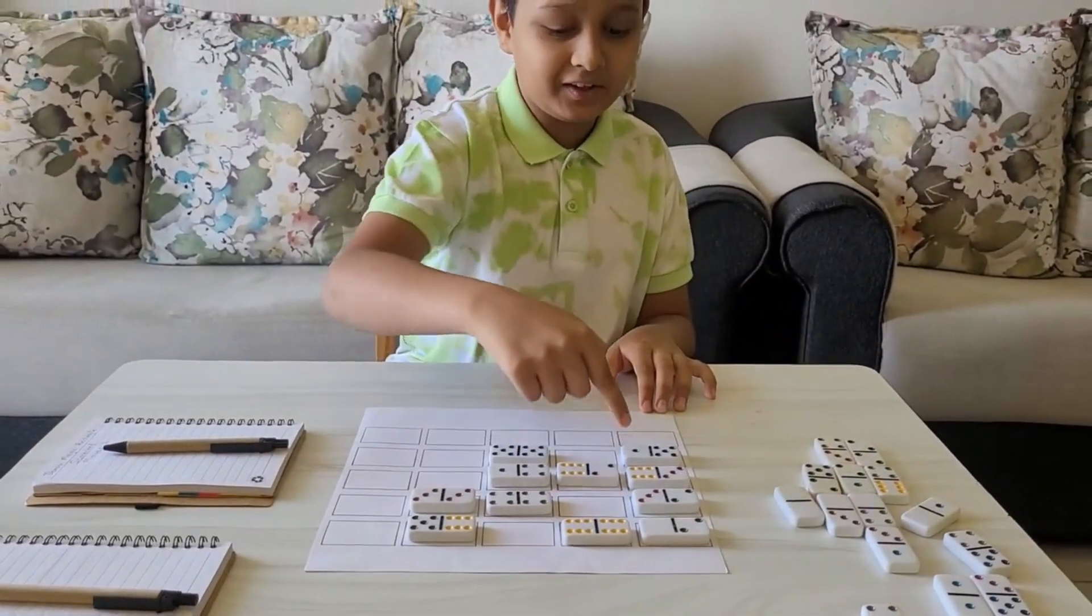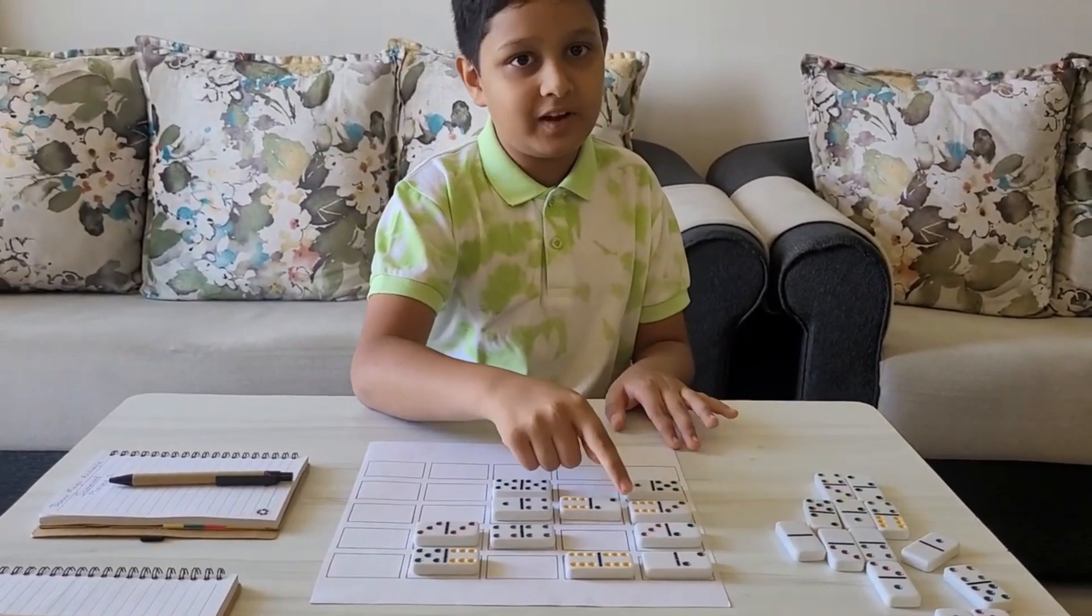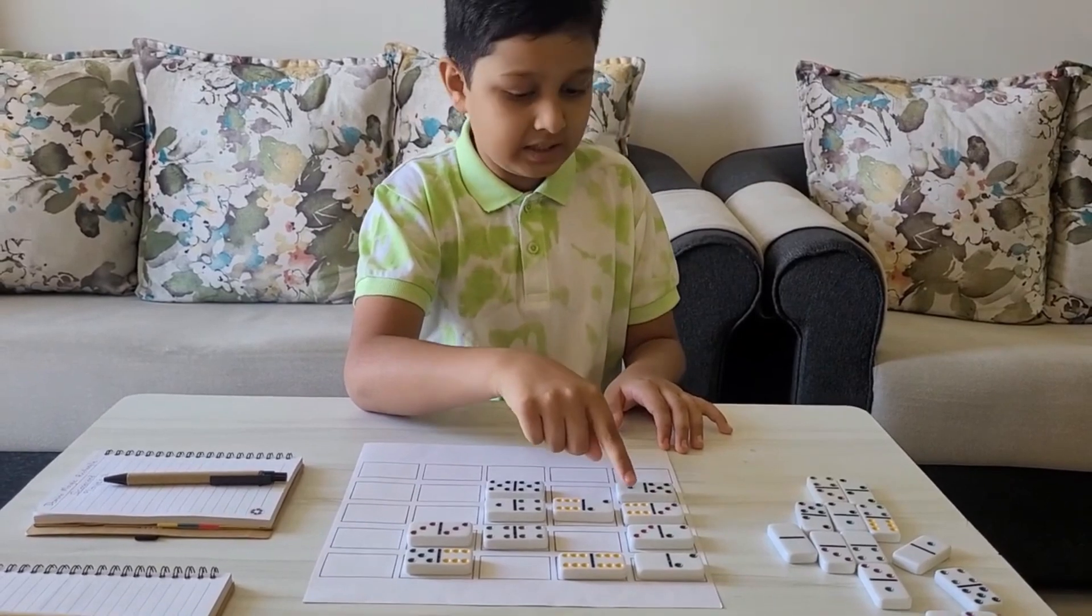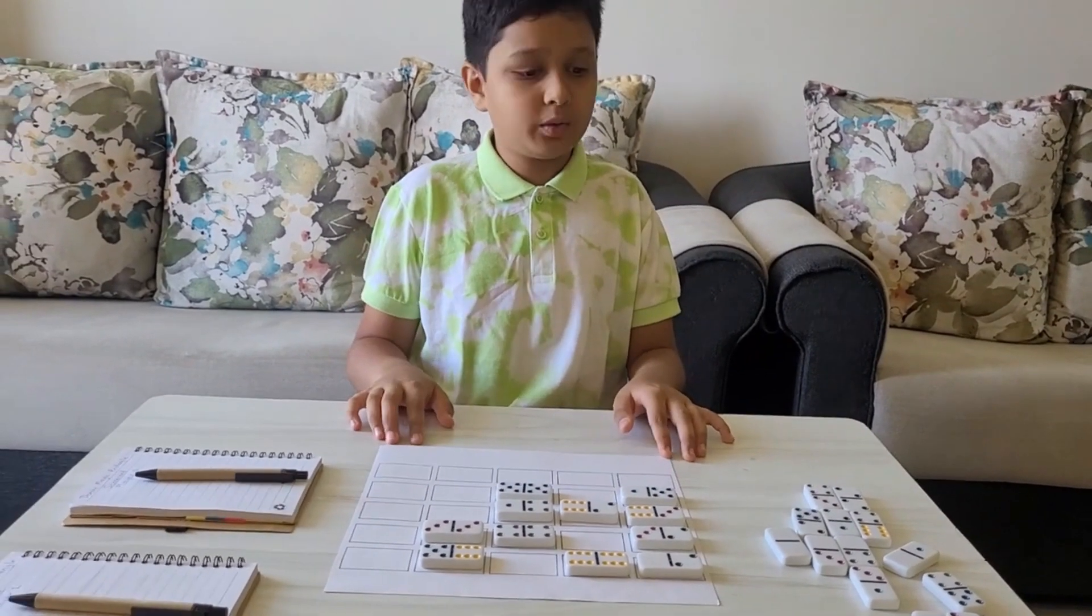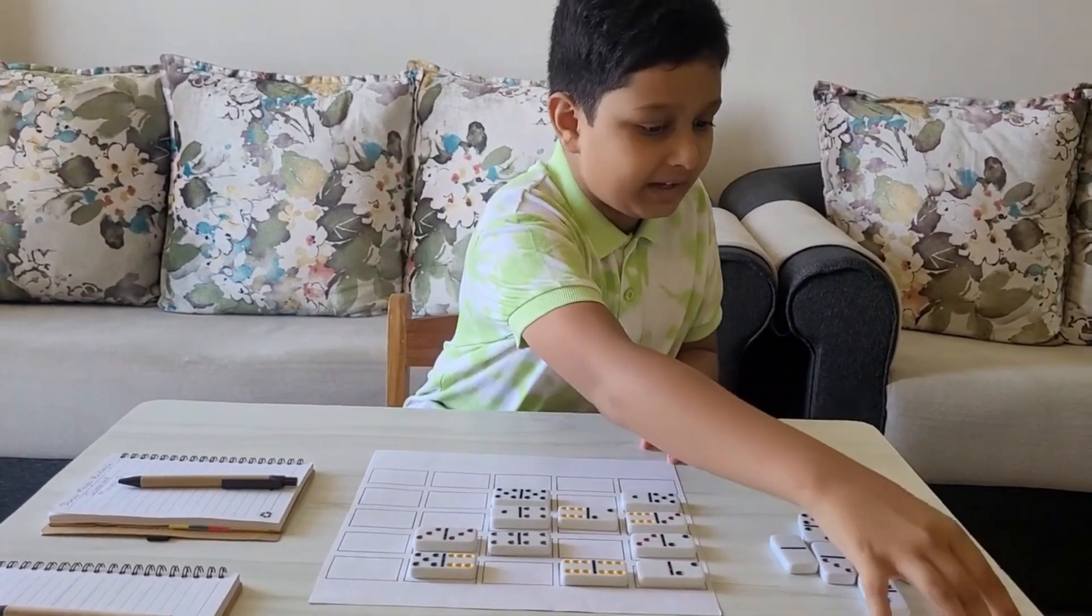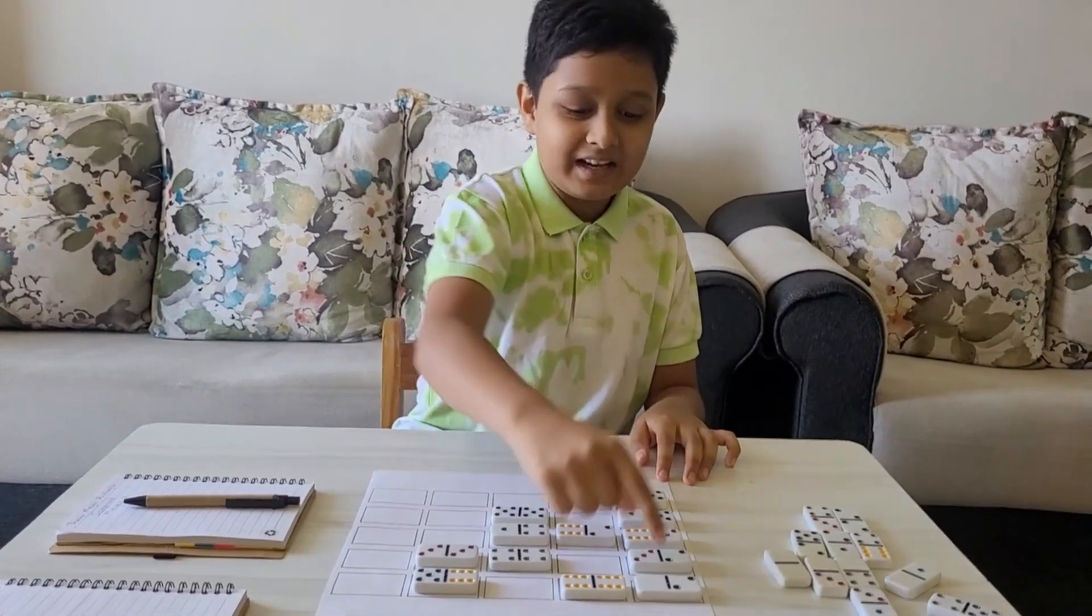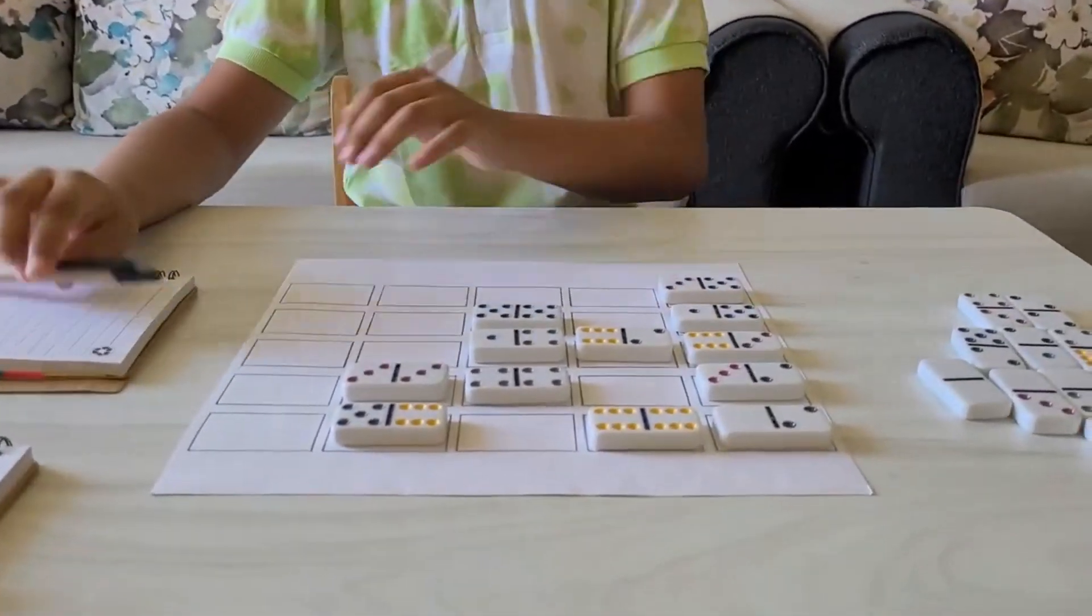Okay, now let me look at this one. 2 plus 5 is equal to 7, 7 plus 9 is equal to 16, 16 plus 6 is equal to 22. I can play 8 over here, and yes, I got 10 points for this column.